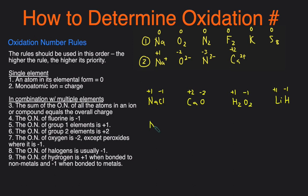Let's look at NO. This involves an element we don't have a specific rule for — there's no rule for nitrogen. So we use rule number three: the sum of all oxidation numbers equals the overall charge. Oxygen is −2. Since NO has no overall charge shown, the overall charge is zero. So if O is −2, then N must be +2 to make the overall charge zero.